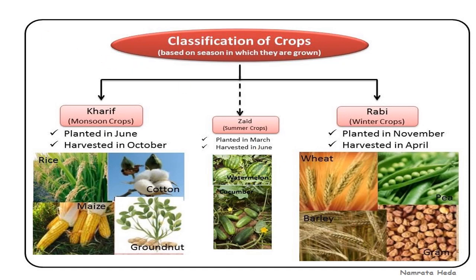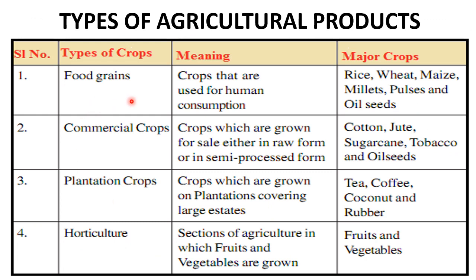On the basis of the nature of use of agricultural products, the agricultural products are classified into the following groups. Number one: food grains — crops that are used for human consumption. Which crops come under this? Rice, wheat, maize, millets, pulses, and oil seeds.